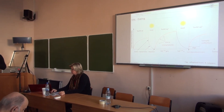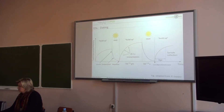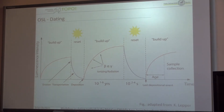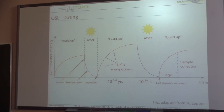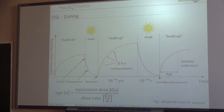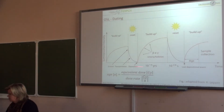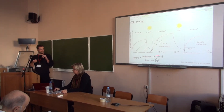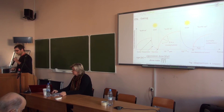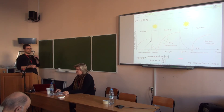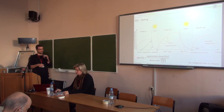I take the sample sealed from daylight, bring it to the laboratory, artificially stimulate the mineral grain, and measure the luminescence signal coming from the mineral. To calculate the age, I need the intensity of the luminescence signal, which is called the equivalent dose, and I need to know how much radiation comes from the surrounding sediments per year — this is the dose rate. Age equals equivalent dose divided by the dose rate.